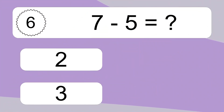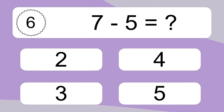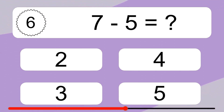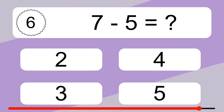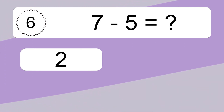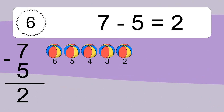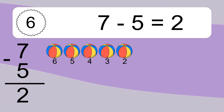7 minus 5 equals what? 7 minus 5 equals 2. Let's count it. 6, 5, 4, 3, 2.